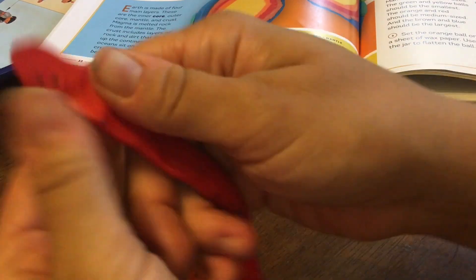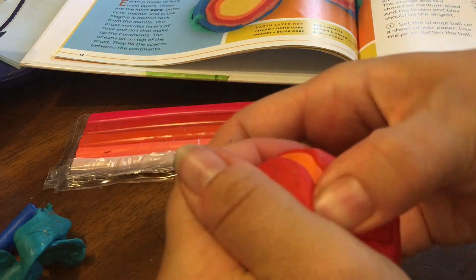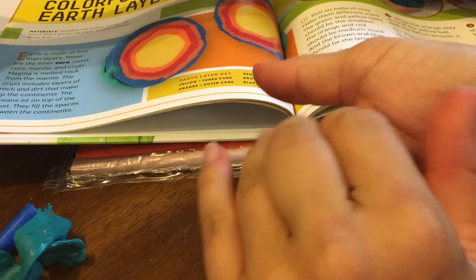After the inner core, we move on to the outer core, and we just use some nice red clay. Easy peasy.